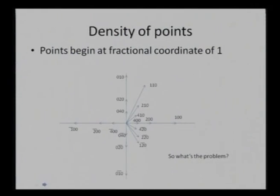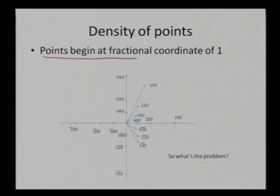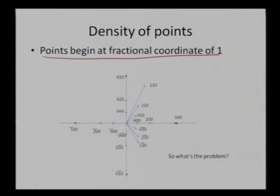Coming back to what forms the basis of reciprocal lattices: if I see a particular crystal and start defining each and every plane by their normals, the points begin at a fractional coordinate of 1. This defines my unit cell with dimensions of 1 on each side. As I move into the crystal, I see different planes — plane 200, plane 400 — all falling from outside to inside.